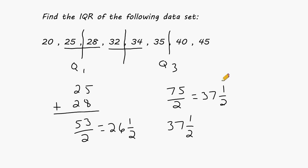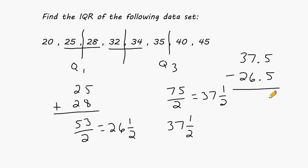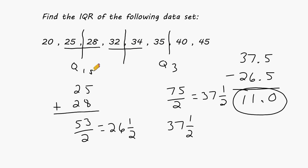Now that we know the values of Q3 and Q1, we just subtract them. So we take 37.5 and subtract 26.5. 5 minus 5 is 0, 7 take away 6 is 1, and 3 take away 2 is also 1. So the IQR of this data set is 11, which means the distance from Q1 to Q3 is 11.